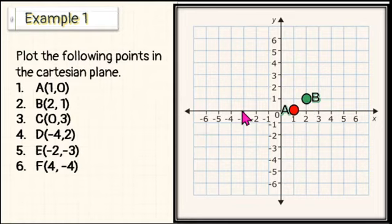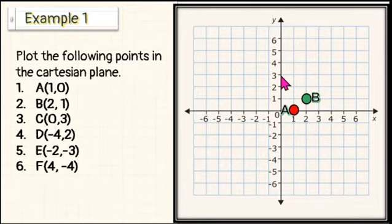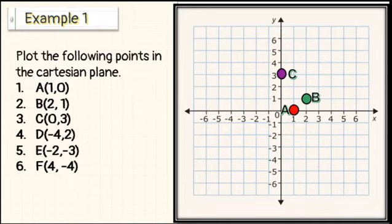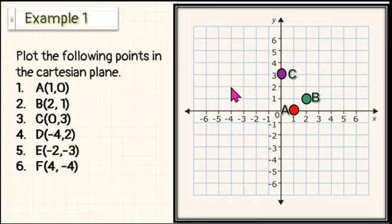Number 3: C (0, 3). Start from the origin and then move 3 units above, and the location of point C is here. Number 4: D (negative 4, 2). Since the x-coordinate is negative and the y-coordinate is positive, point D is in quadrant 2. Count 4 units to the left from the origin, then 2 units above. The location of point D is here.